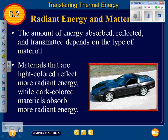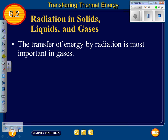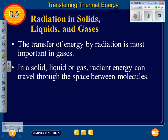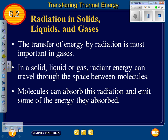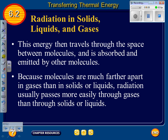Light-colored materials reflect more radiant energy, while dark-colored materials absorb more radiant energy. When radiant energy is absorbed by a material, the thermal energy of the material increases. The transfer of energy by radiation is most important in gases. In a solid, liquid, or gas, radiant energy can travel through space between molecules. Molecules can absorb this radiation and emit some of the energy they absorb, which then travels to and is absorbed by other molecules. Because molecules are much farther apart in gases, radiation usually passes more easily through gases than through solids or liquids.